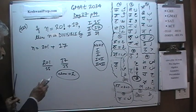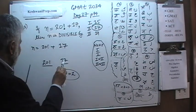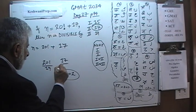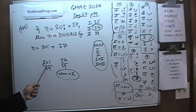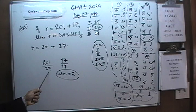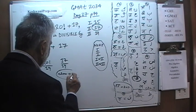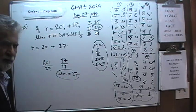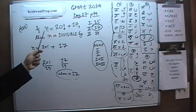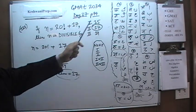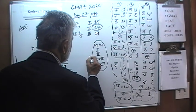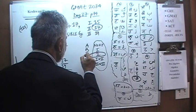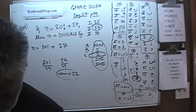Similarly, if you were to try to divide this quantity n by 19, the same thing happens. 20 factorial will have no problem going evenly into 19 because there is a 19 buried in it — 20 times 19 times 18 — it will go nicely. But when we get to the plus 17 part, we will have a remainder of the entire 17, because 17 does not divide into 19. The only thing this quantity divides evenly into is 17. The answer is C.